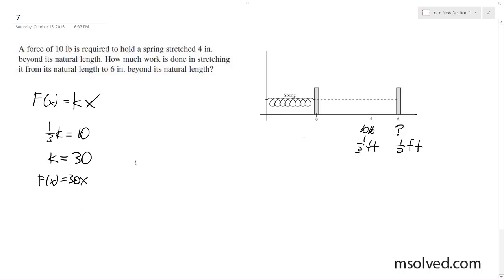Okay, so now we can find how much work's done stretching it from four inches to six inches. Okay, work's going to be zero to one-half, so that's six inches or half a foot. Thirty x dx, we get thirty times from zero to one-half x dx.